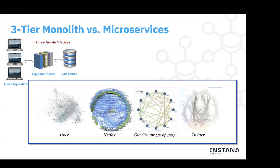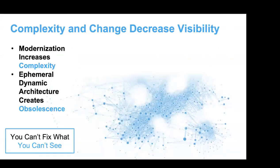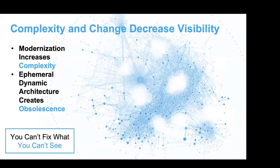On top of microservices, you have hyper-virtualization with containers — not just Docker but CRI-O and others — plus orchestration through Kubernetes in all its distributions, and serverless functions on every cloud provider. All these create an environment that is more dynamic, more ephemeral, and harder to understand. Some microservice architectures are affectionately called the 'death star architecture' — way too complex for any individual or organization to manually understand.